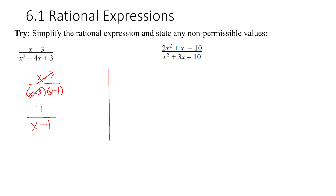We should also find any non-permissible values. This simplifies to one over x minus one. Setting the denominator equal to zero and adding one to both sides: x equals one is the non-permissible value. If x equals one, the denominator is zero.